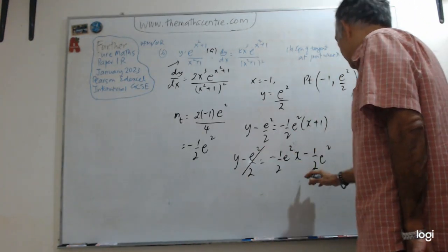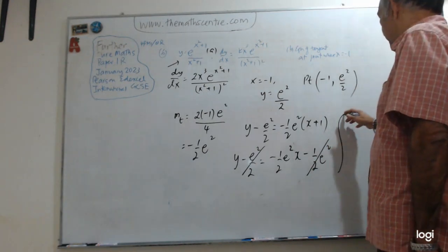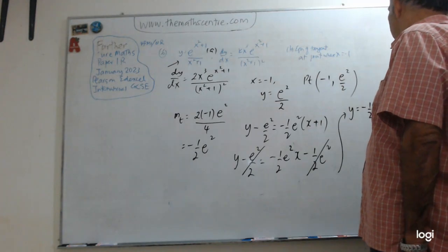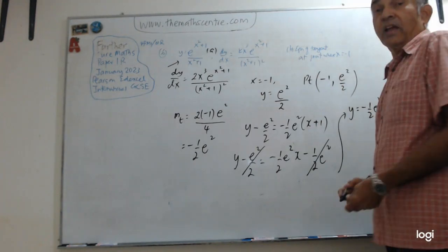So we are left with our final answer: y equals minus 1 half e squared x. And we are done.